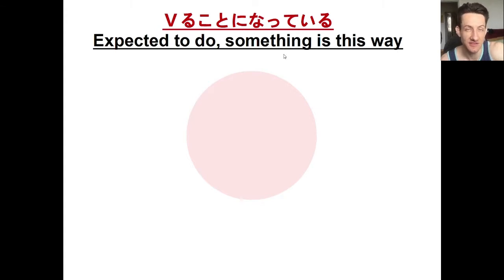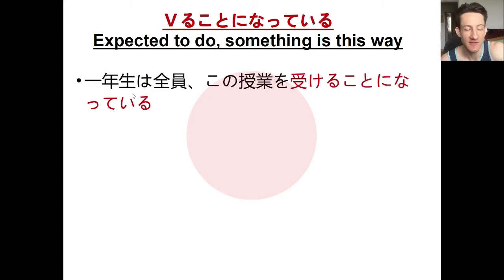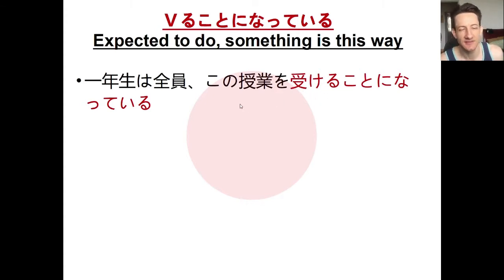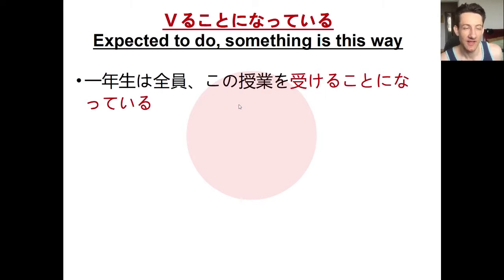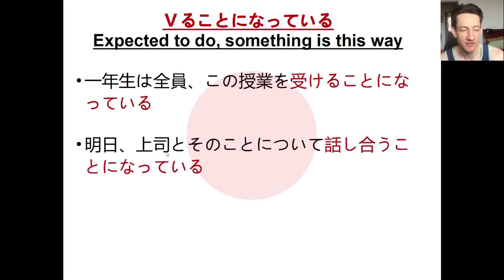In the example sentence, 一年生は全員このじゅぎょうを受けることになっている — all first-year students must take this class, but none of the students made this rule or decided to take it. The school decided for them. Compare: ことにする means to decide to do something yourself, like 一人でいくことにした, I decided to go by myself. But ことになっている means it was decided for you, and you just have to live with it. Next example: 明日、上司とそのことについて話し合うことになっている — tomorrow I'm expected to discuss that matter with my boss.